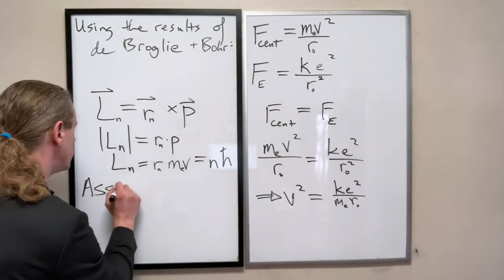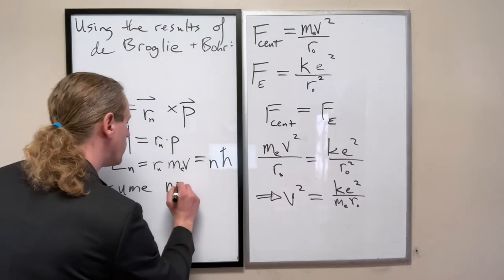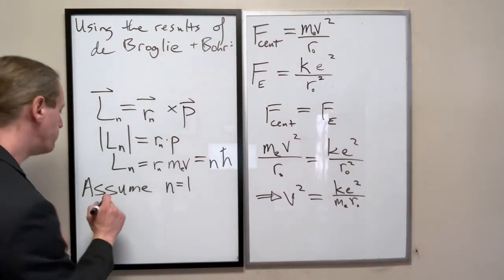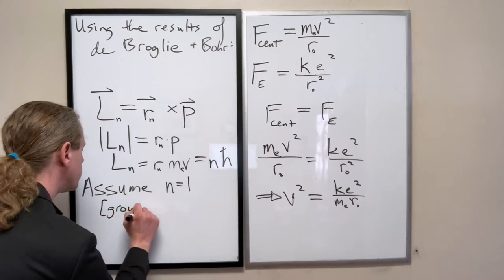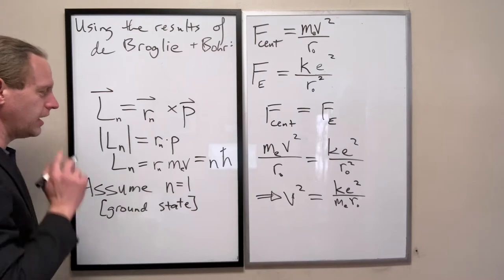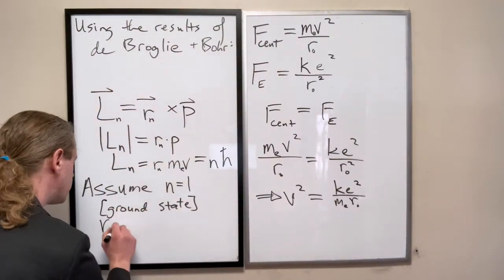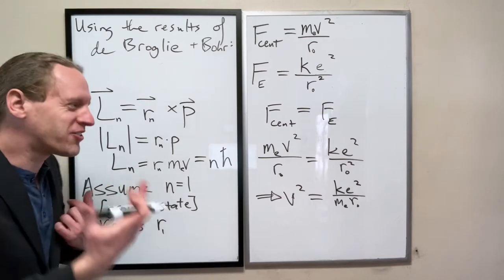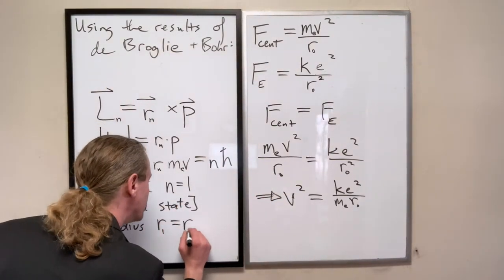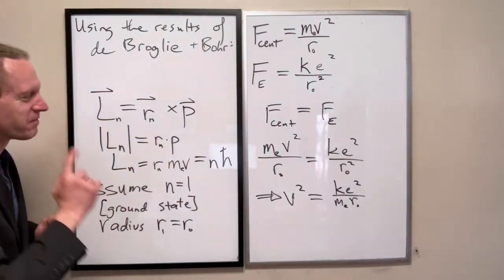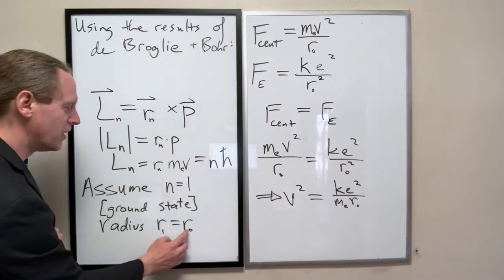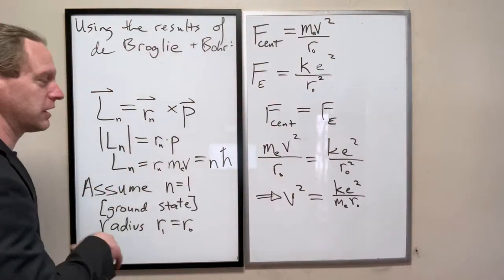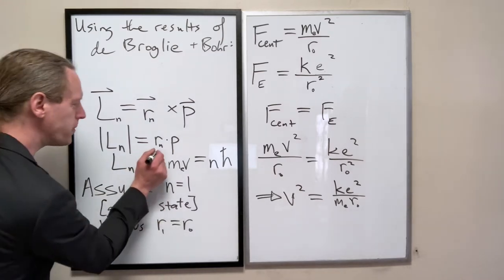We're going to assume energy level N equal 1, which means the ground state. The one thing that I don't love, the radius, which we should using this notation write as R sub 1, is also we're calling it R sub 0. This is the ground state radius. From here on out, when I write the radius by assuming that ground state, we're going to call it R 0, rather confusingly.